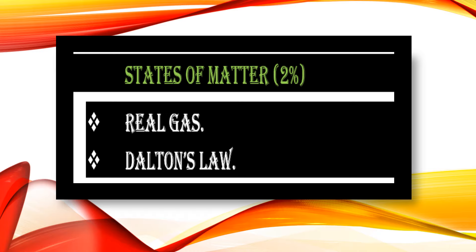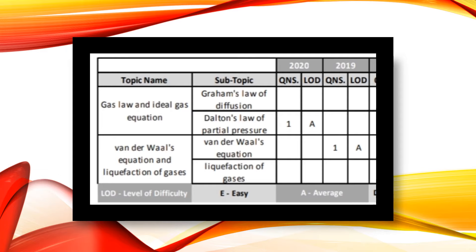States of Matter holds 2% weightage. The main subtopics are Dalton's law, gas laws, ideal gas equation, Graham's law of diffusion, and Dalton's law of partial pressures. In 2020, one average-difficulty question was asked from gas laws and the ideal gas equation. In 2019, a question on van der Waals equation was asked at average difficulty.